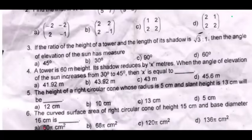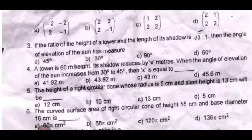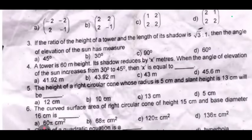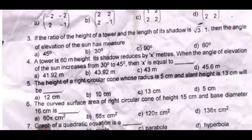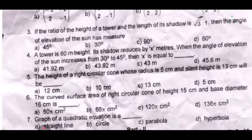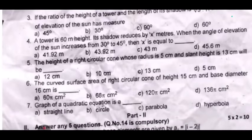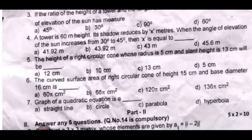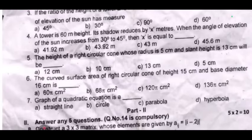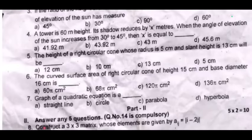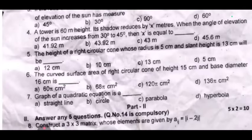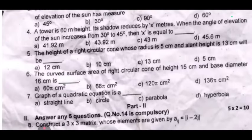If the ratio of the height of a tower and the length of its shadow is root 3 to 1, then the angle of elevation of the sun is — dash. A tower is 60 meters height; its shadow reduces by x meters when the angle of elevation of the sun increases from 30 degrees to 45 degrees.